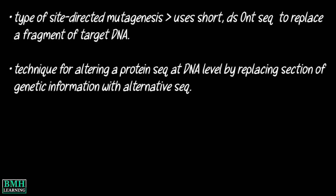Cassette mutagenesis is a type of site-directed mutagenesis that uses a short double-stranded oligonucleotide sequence to replace a fragment of target DNA.